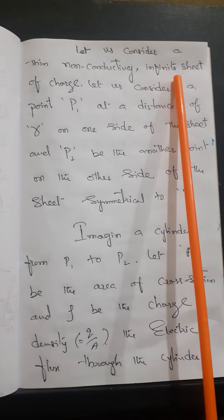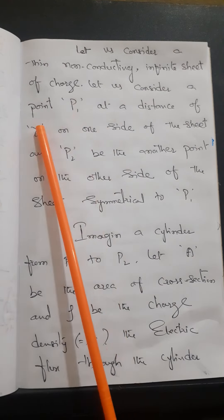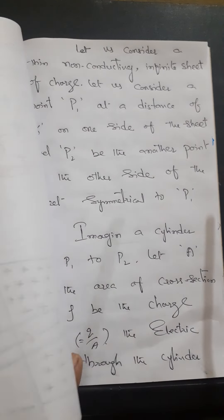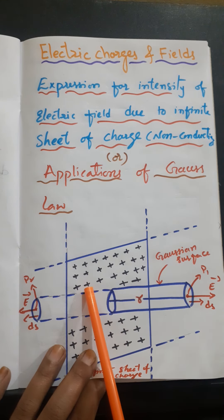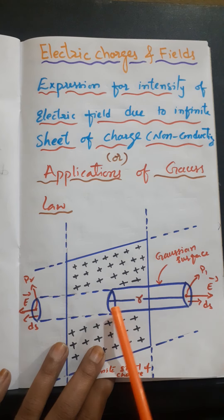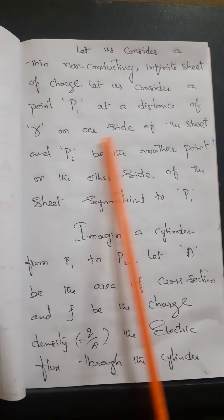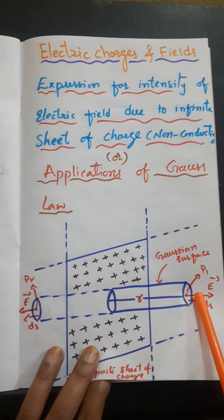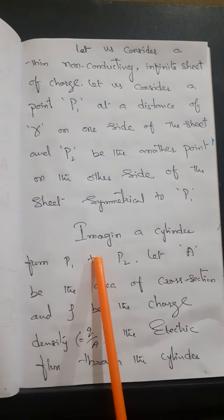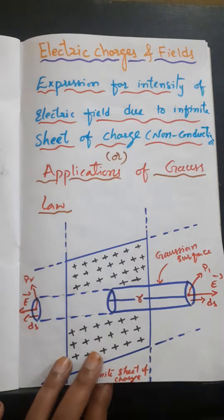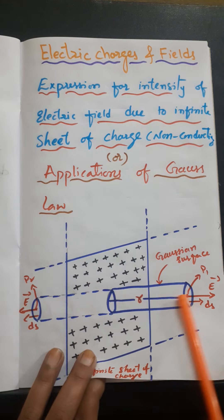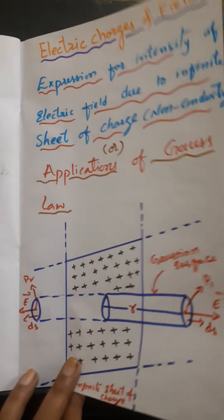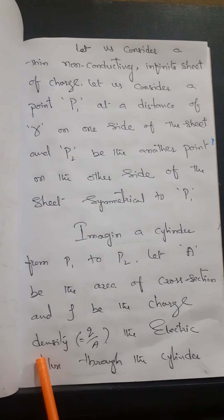Let us consider a non-conducting infinite sheet of charge, with point P1 at a distance r on one side of the sheet, and P2 on the other side. These points P1 and P2 are symmetrical. Now imagine a cylinder from P1 to P2. Let A be the area of cross-section of this cylinder, and let rho (σ) be the charge density, which is the ratio of charge to area.